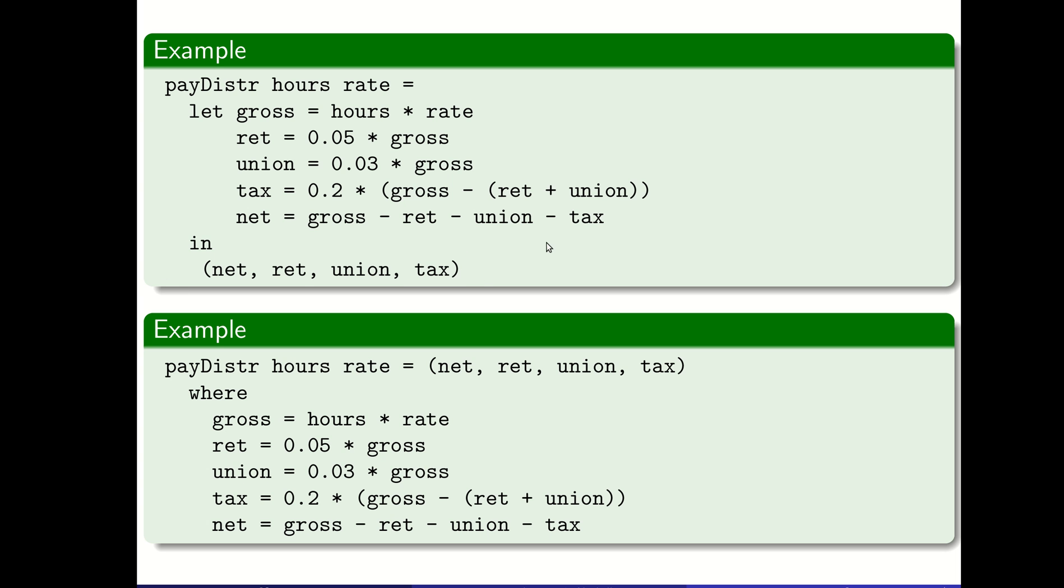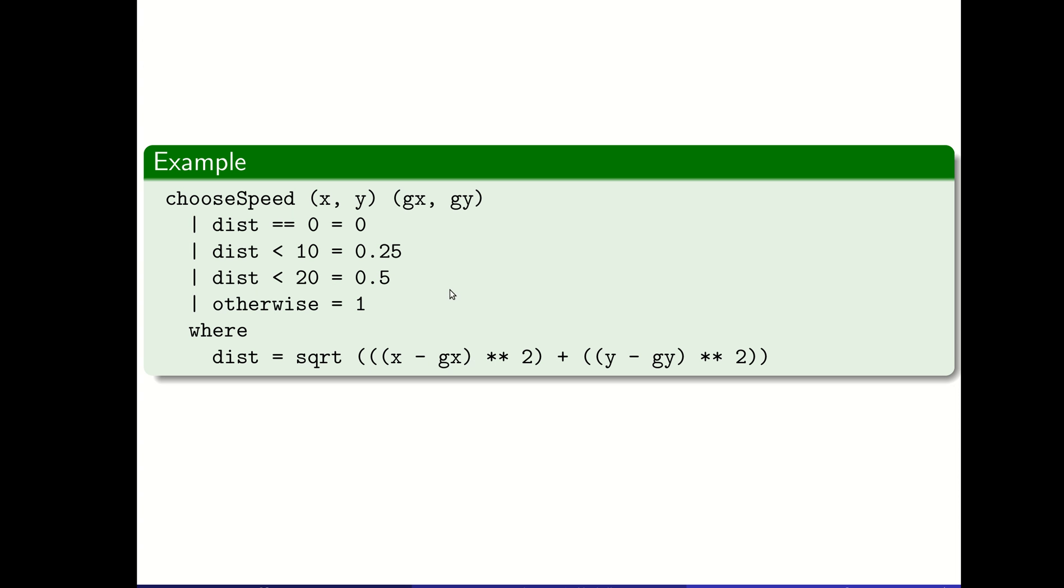In this case, it's mostly a choice of preference. In some cases, there's actual reasons to use one versus the other. Here we have a function defined using guards so we choose a speed based on our distance from our target. We slow down as we get closer to it.